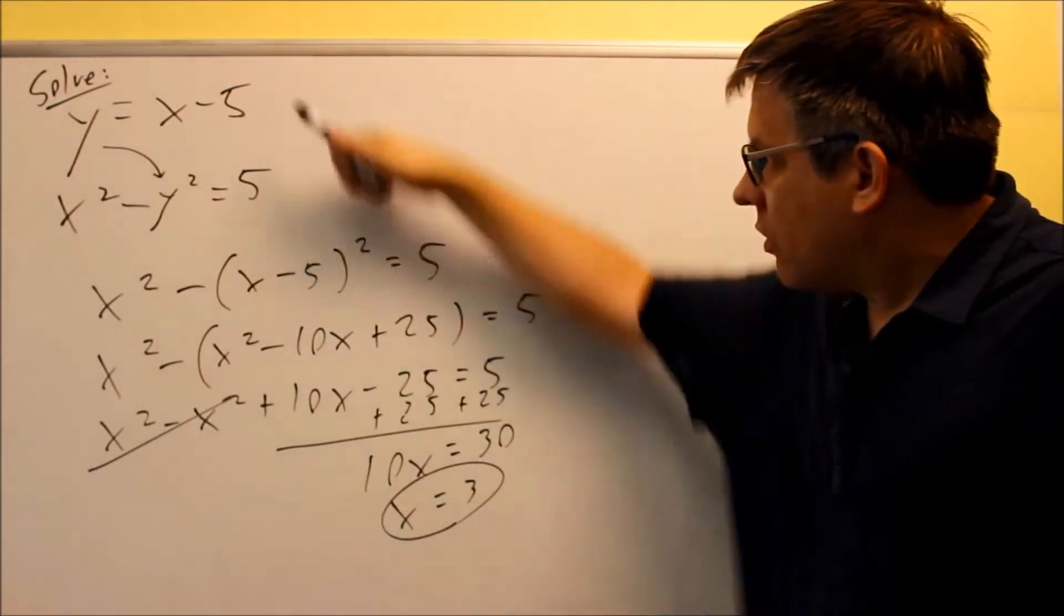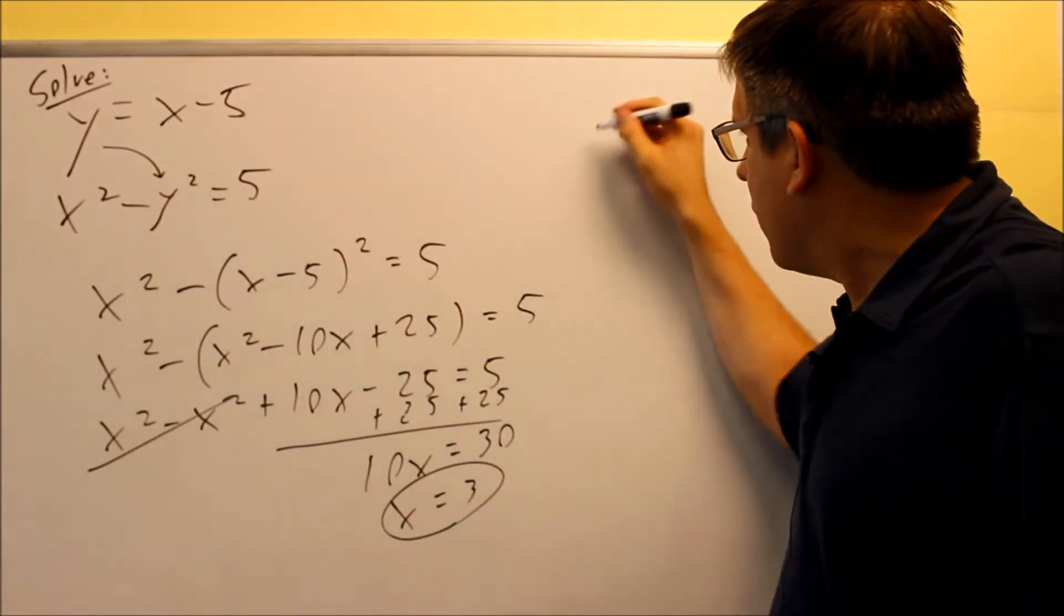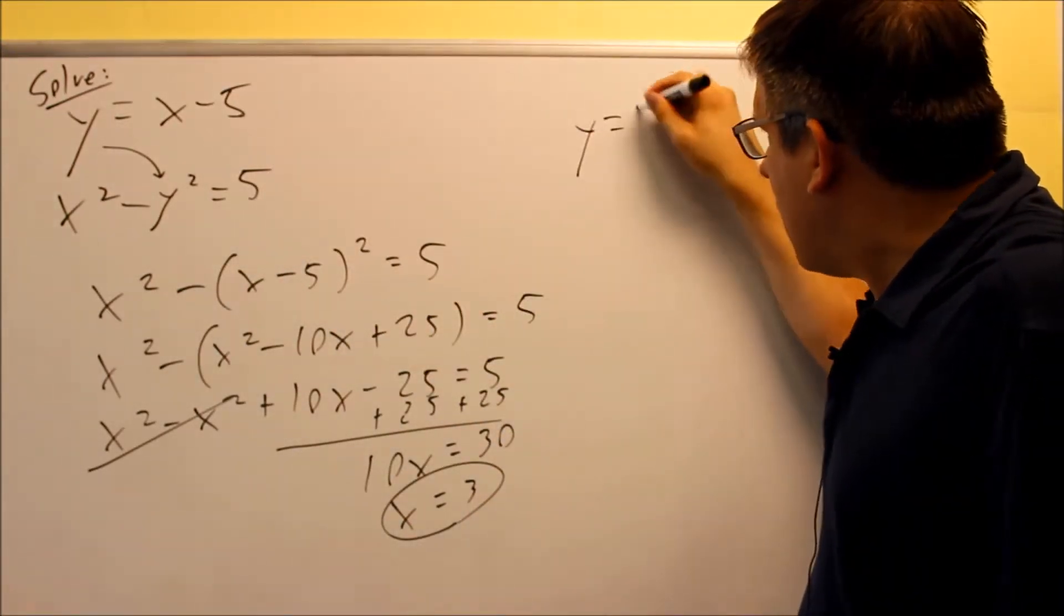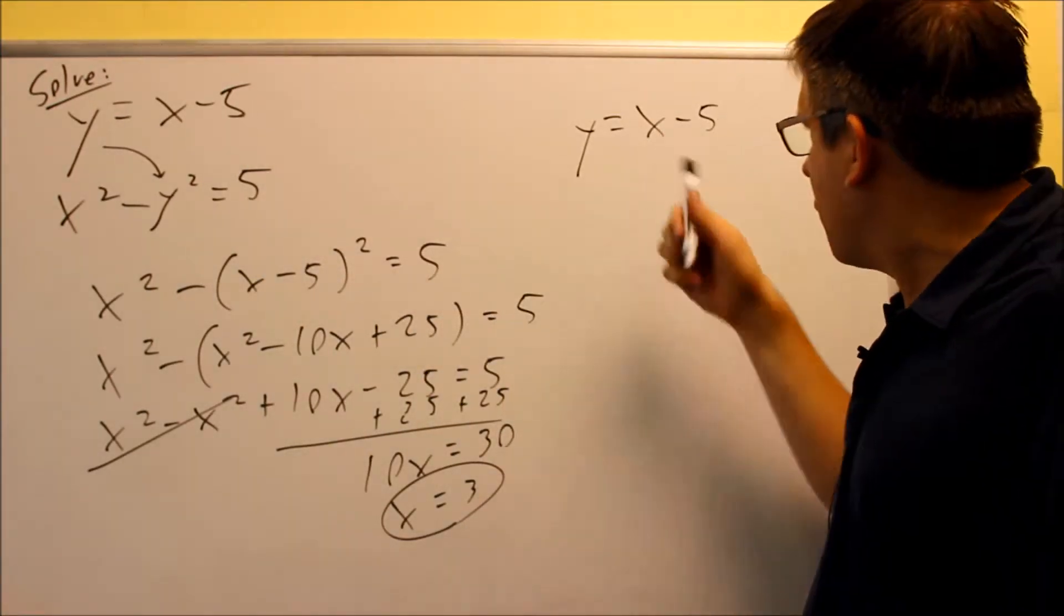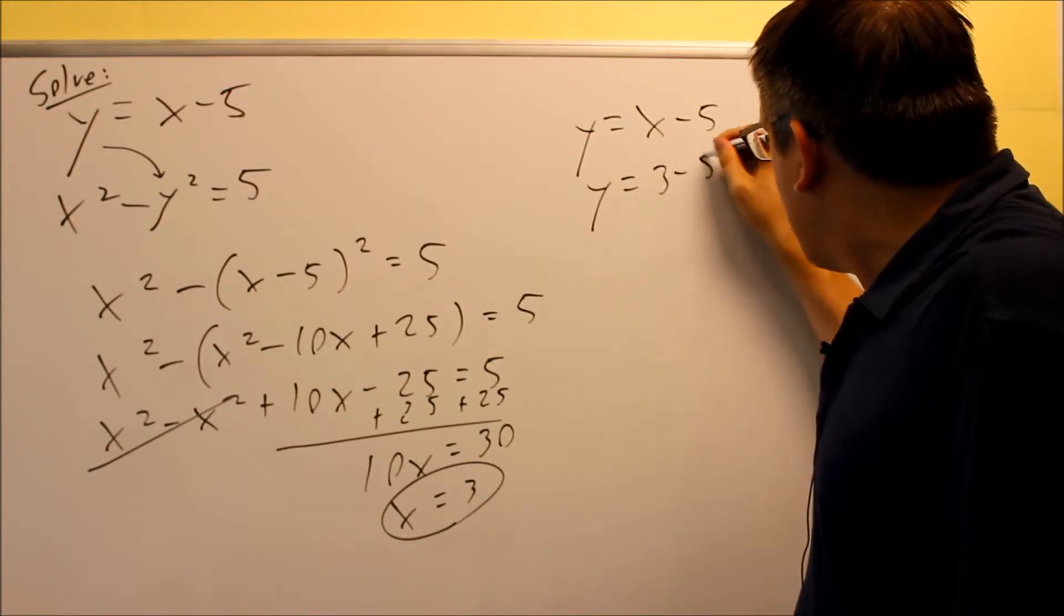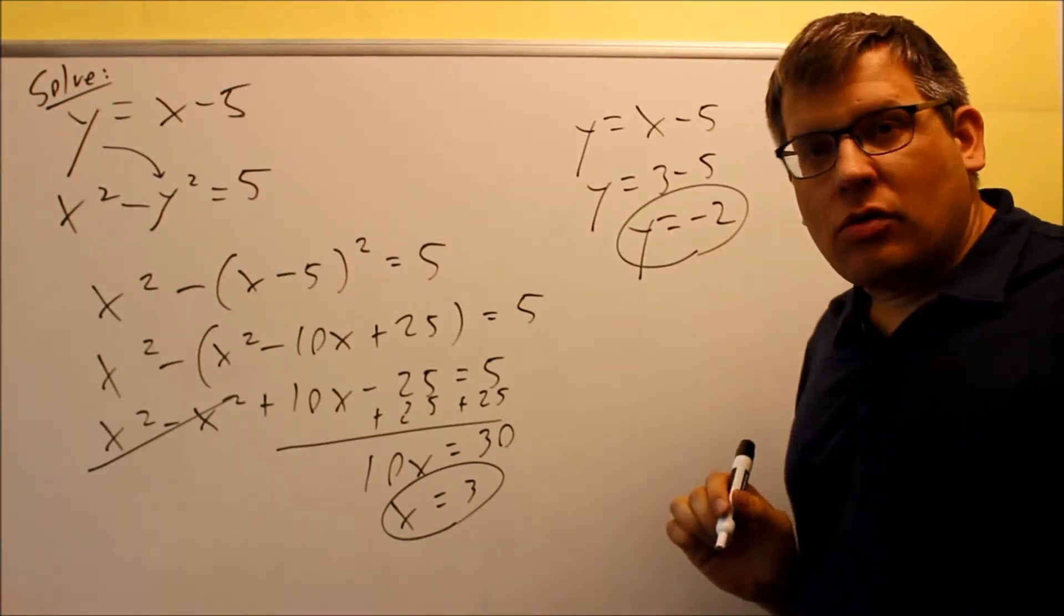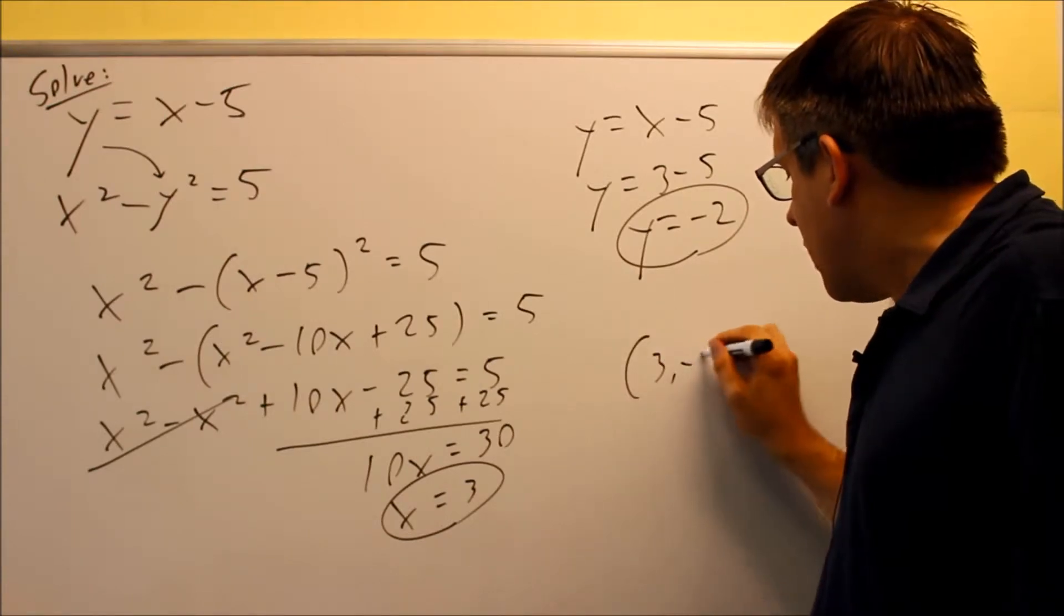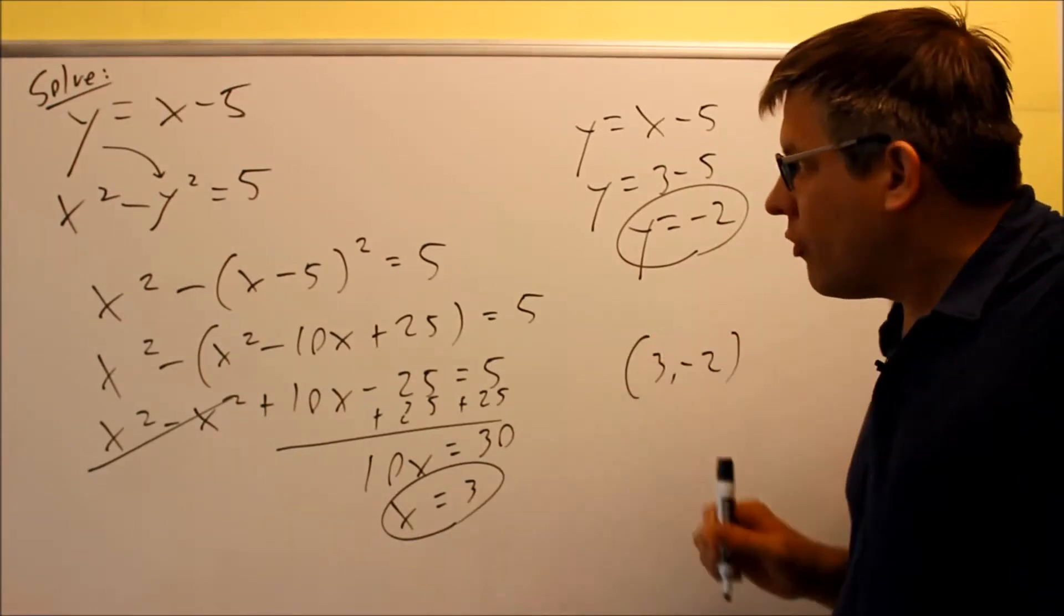Now, going back into here, this one has already solved for y. So we can just put our answer directly in there to get the answer for y. We have y equals x minus 5. Now we'll just put the 3 in there. y equals 3 minus 5, and we get y is equal to negative 2. So our answer is going to be 3 and negative 2. This particular one, we only have one point of intersection.